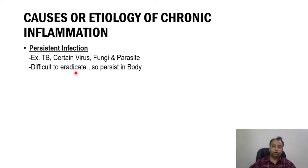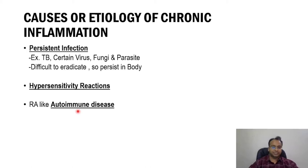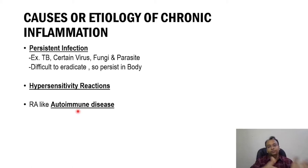Hypersensitivity reaction is another example of chronic inflammation. The third etiology is autoimmune disease, particularly in the form of rheumatoid arthritis, SLE, and all that autoimmune disease. In SLE, if you take a biopsy and histopathological examination is done, they will show inflammation by chronic inflammatory cells like lymphocytes and macrophages.